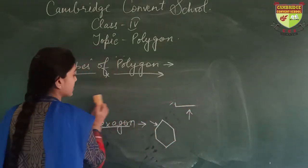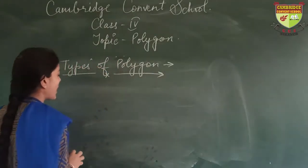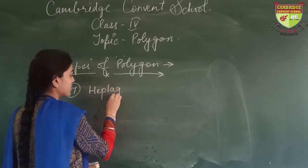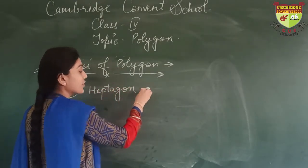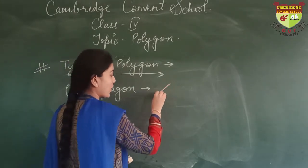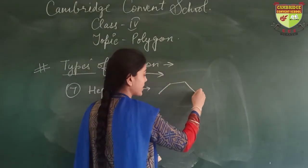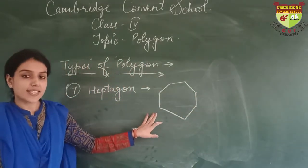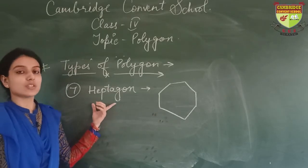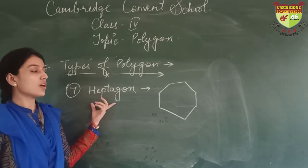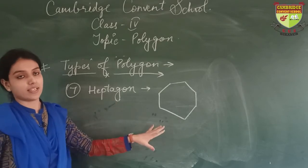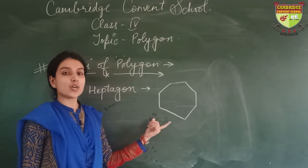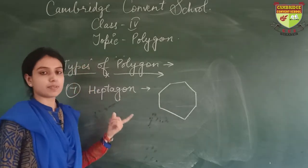Next one is heptagon. A figure which has 7 sides is known as a heptagon. Here the sides are 1, 2, 3, 4, 5, 6, and 7. So this figure is known as heptagon — we also call it heptagon because it has 7 sides.